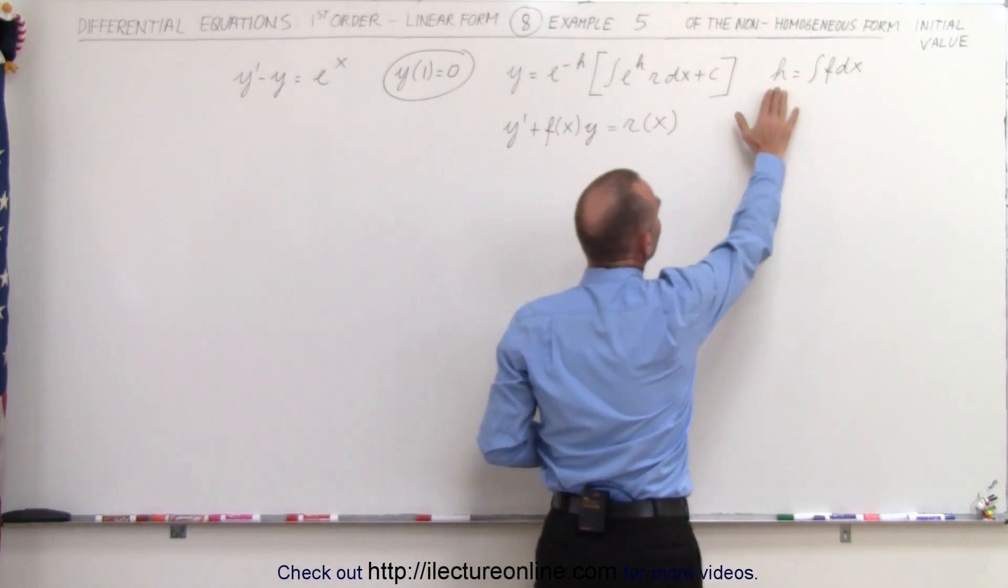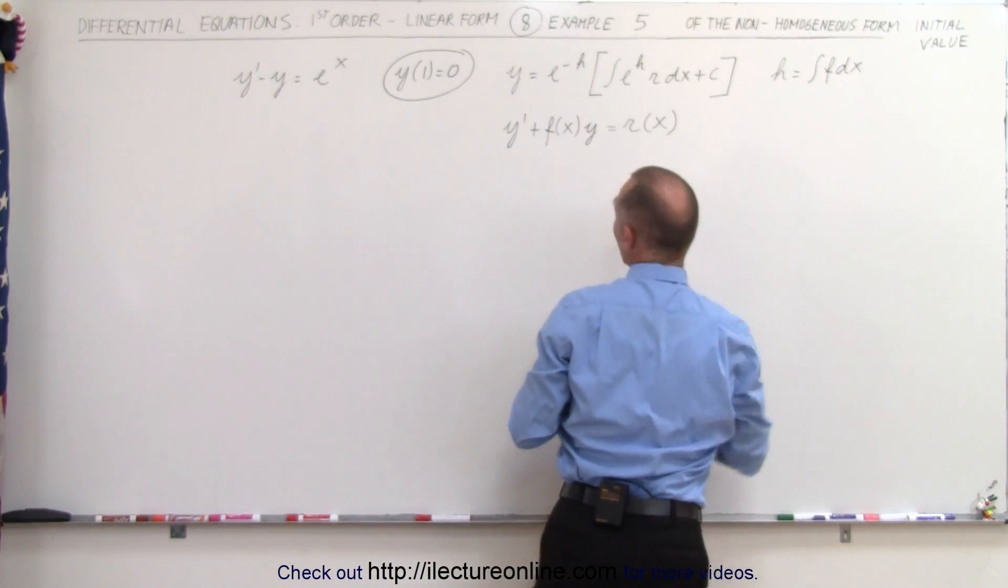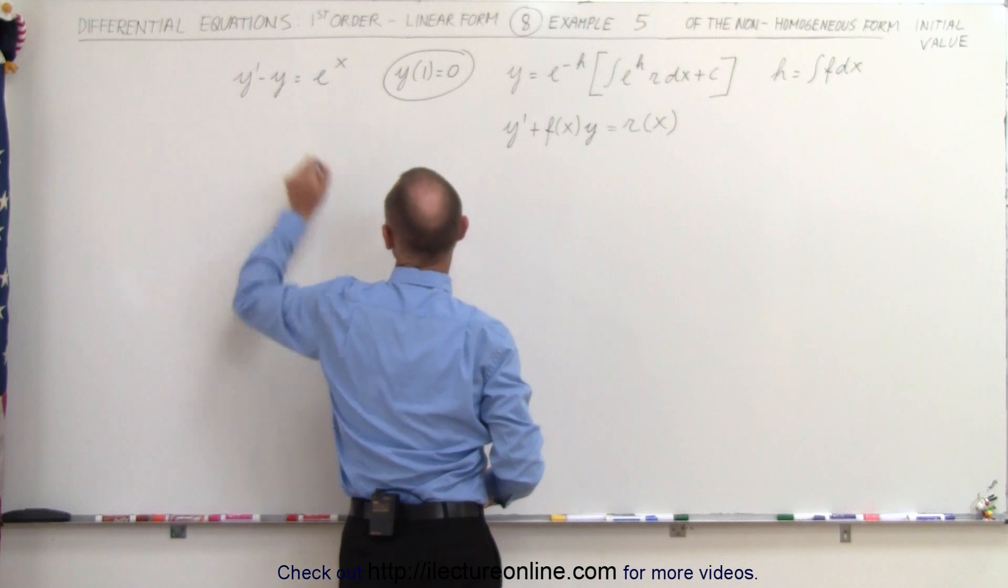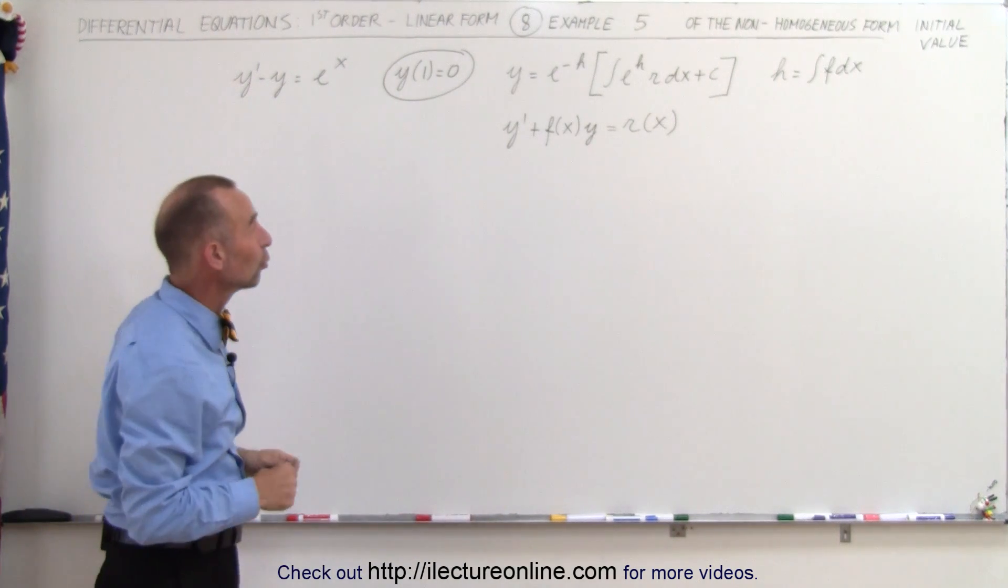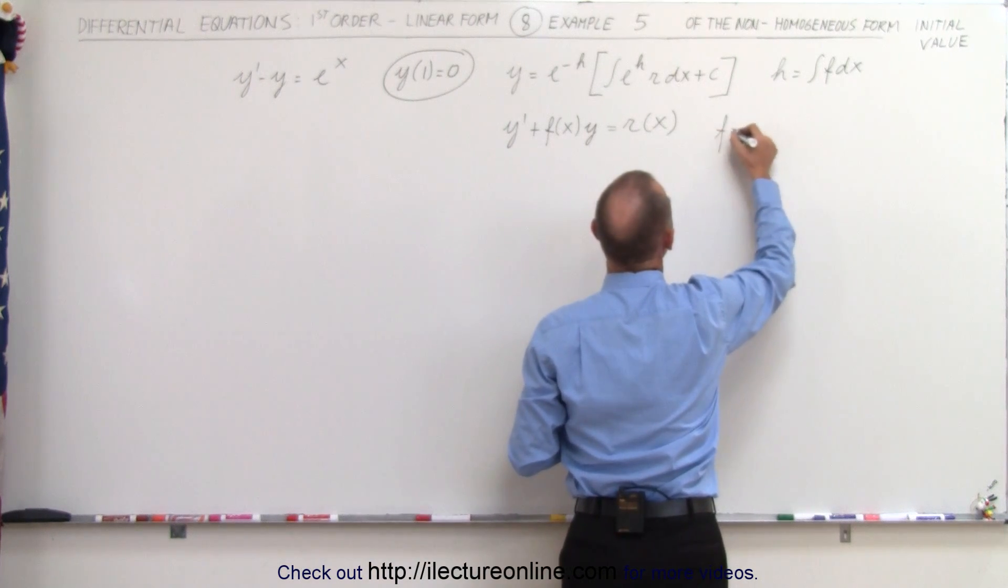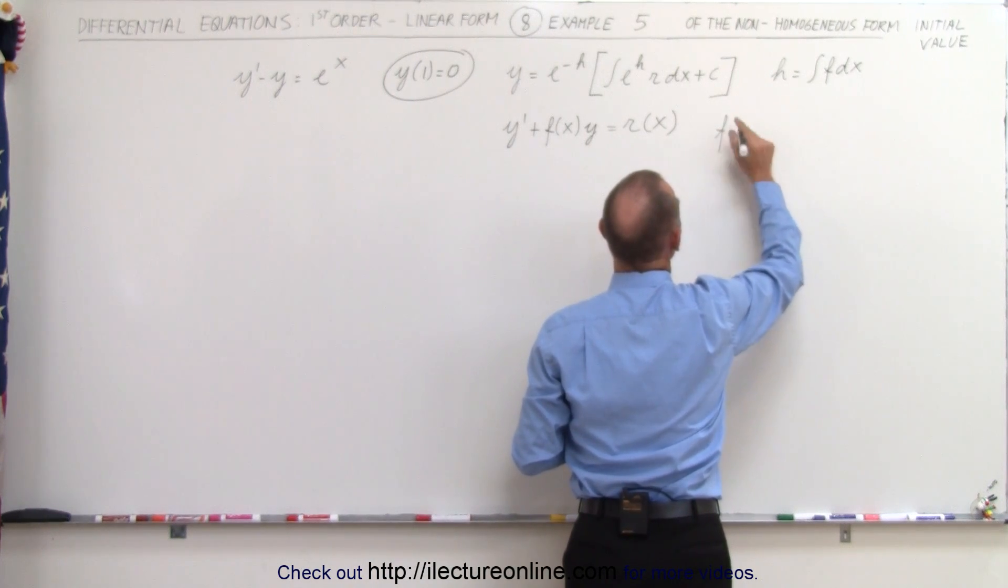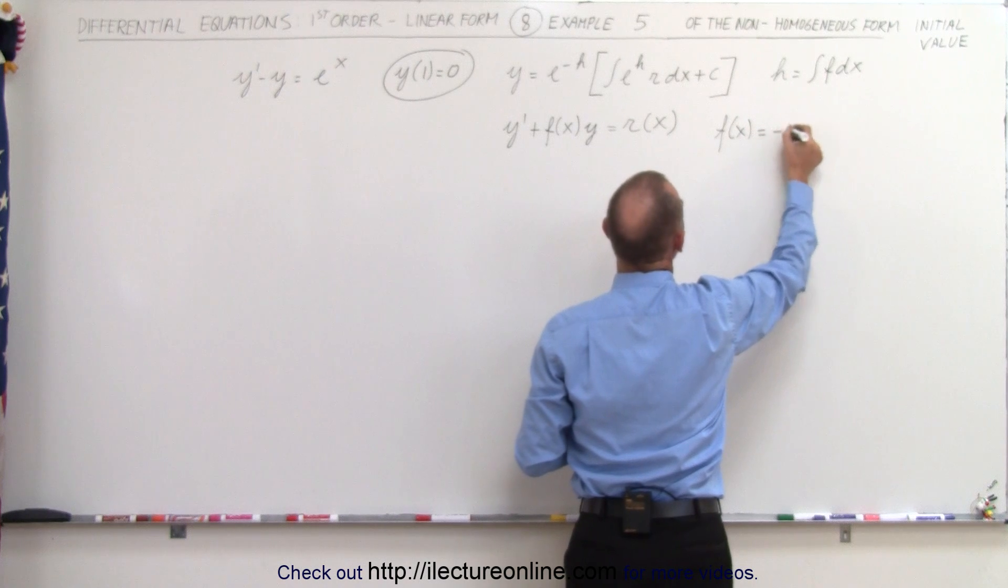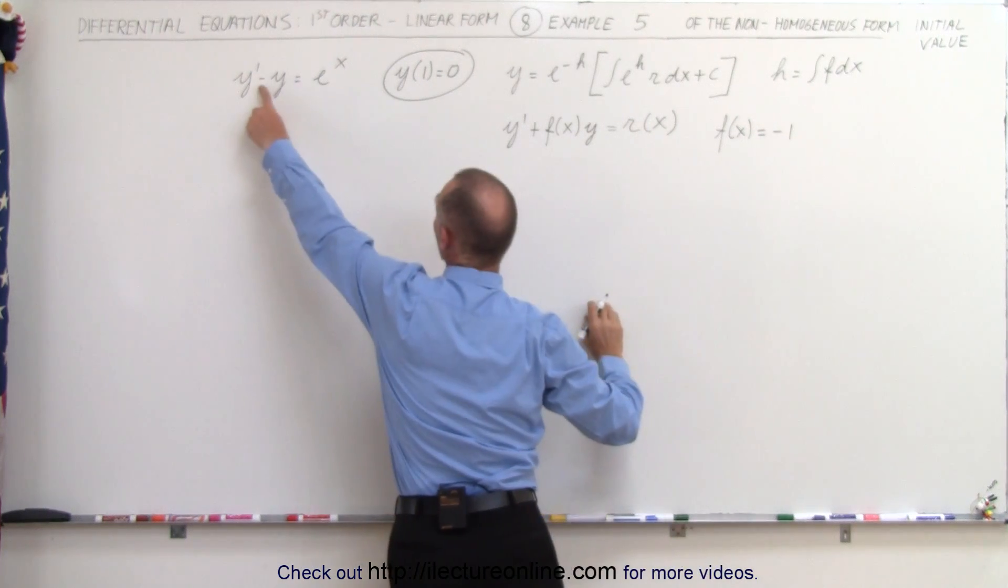Now notice that h is equal to the integral of f dx, where f is the function in front of the y. In this case the function would be minus 1. So let's go ahead and write those down. So we know that f is equal to, and remember that's a function of x, but in this case it's simply equal to minus 1, that's the function in front of the y.